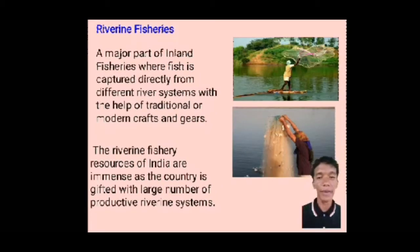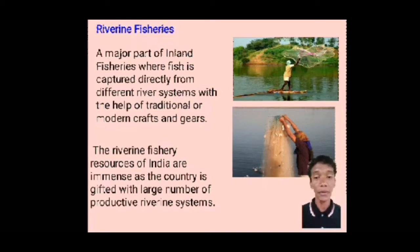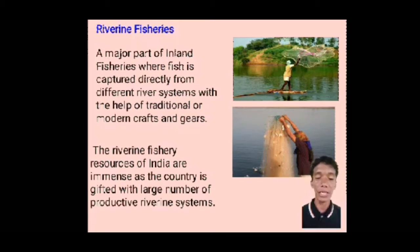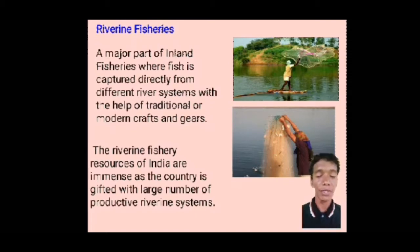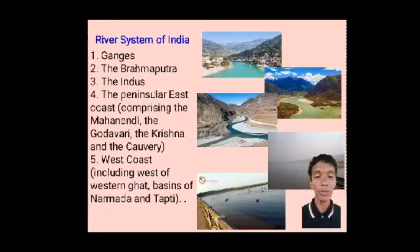Riverine fisheries are a part of inland fisheries where fishes are captured directly from different river systems with the help of scientifically made fish gear. The riverine fisheries resource in India is immense as a large number of productive riverine systems are present, including five major systems: the Ganges, the Brahmaputra, the Indus, the Peninsular Rivers, and the West Coast.